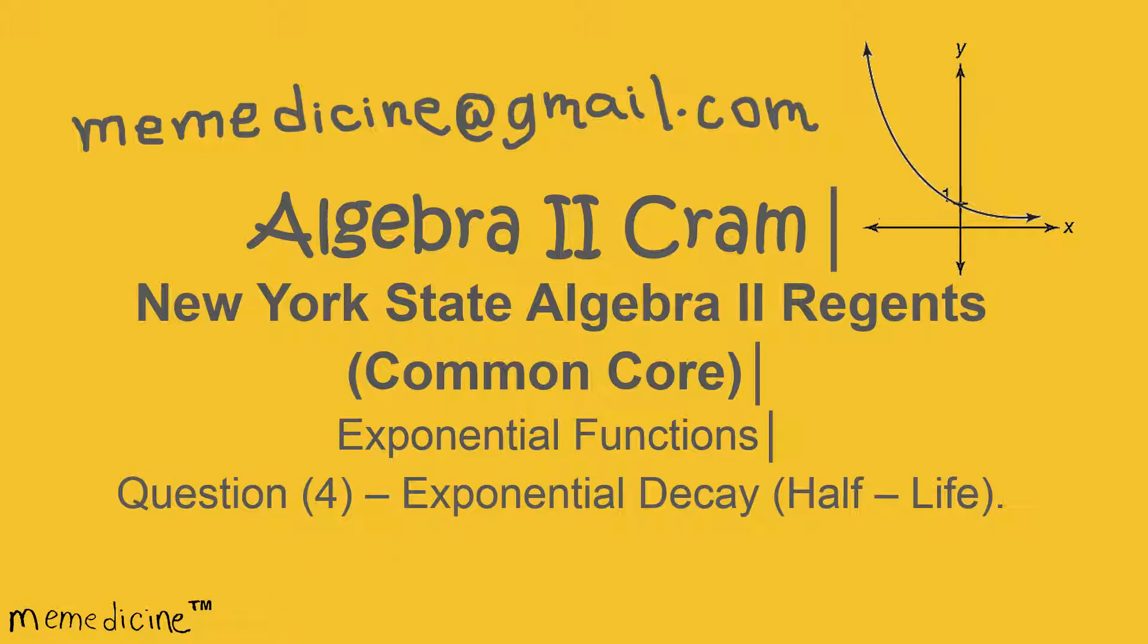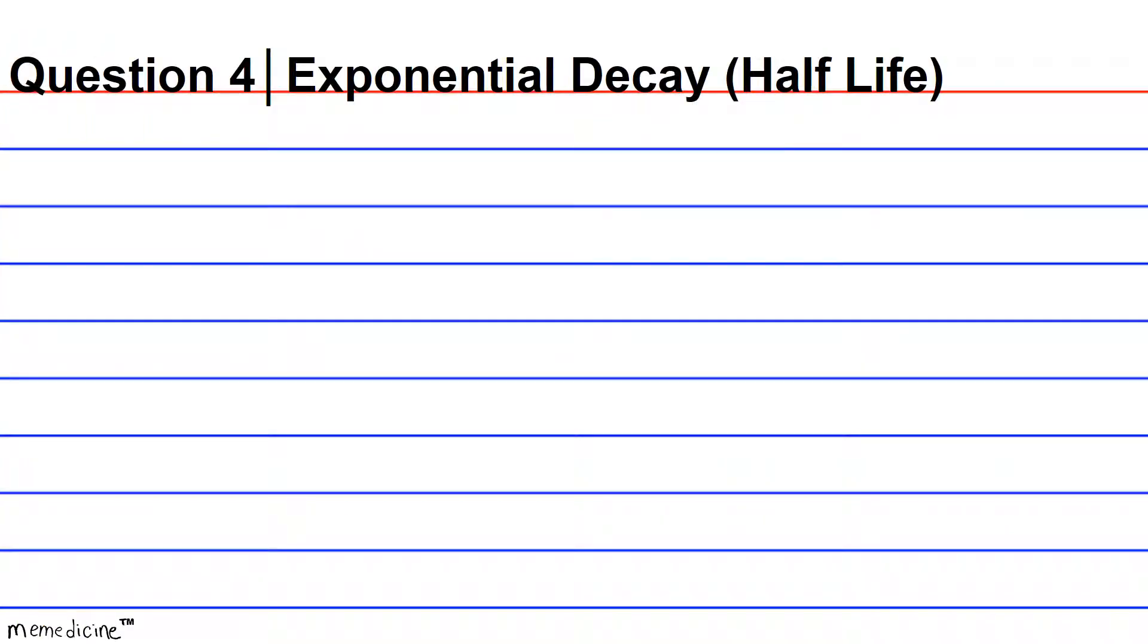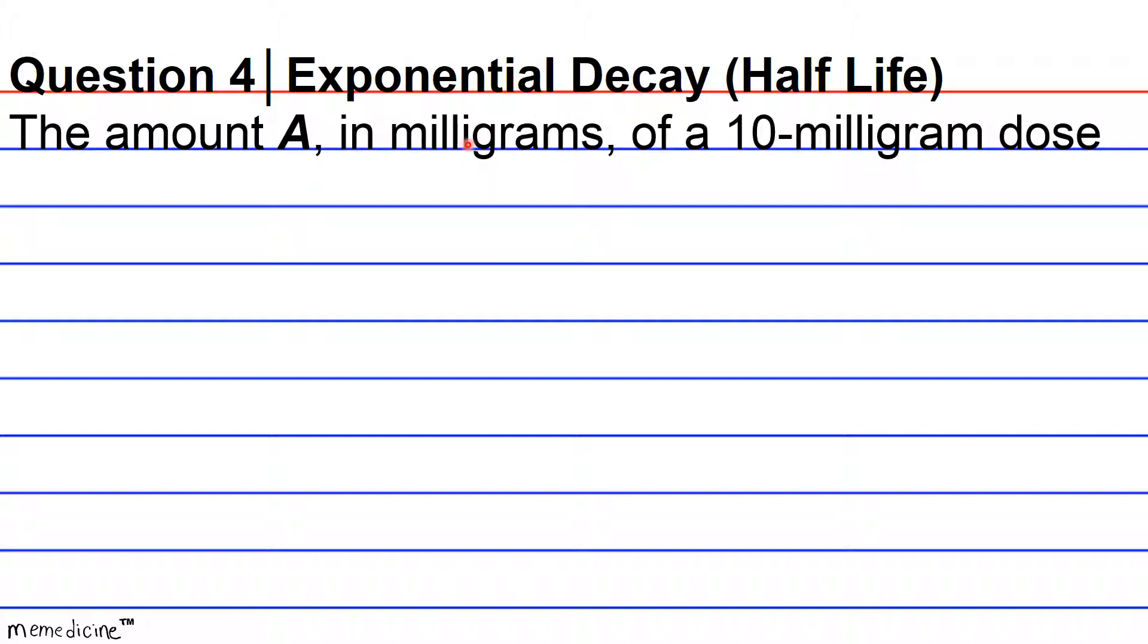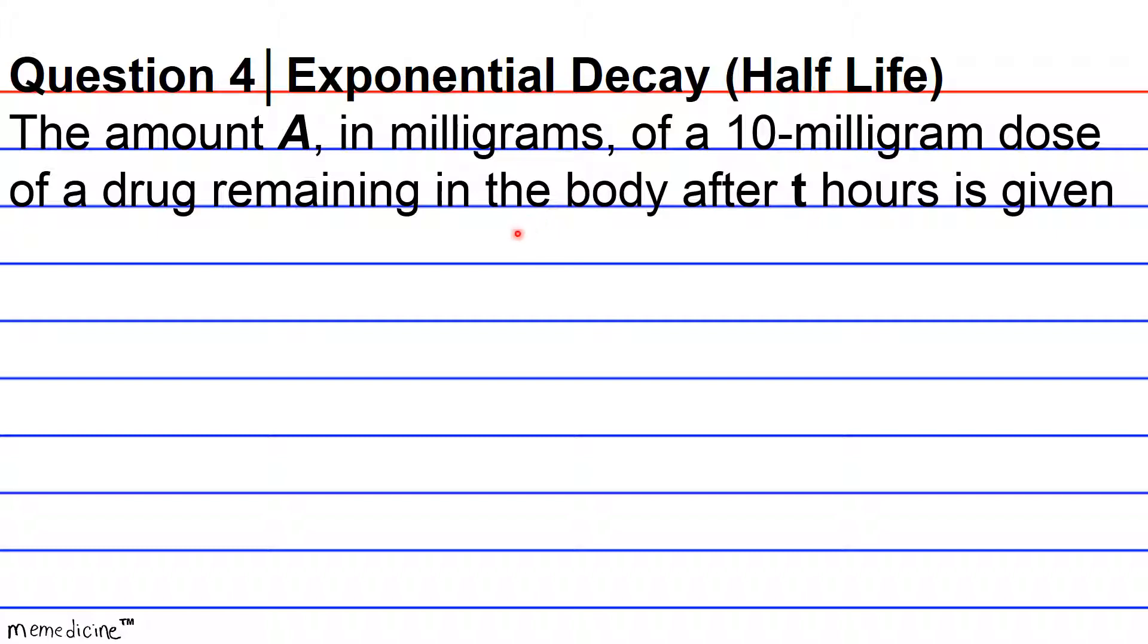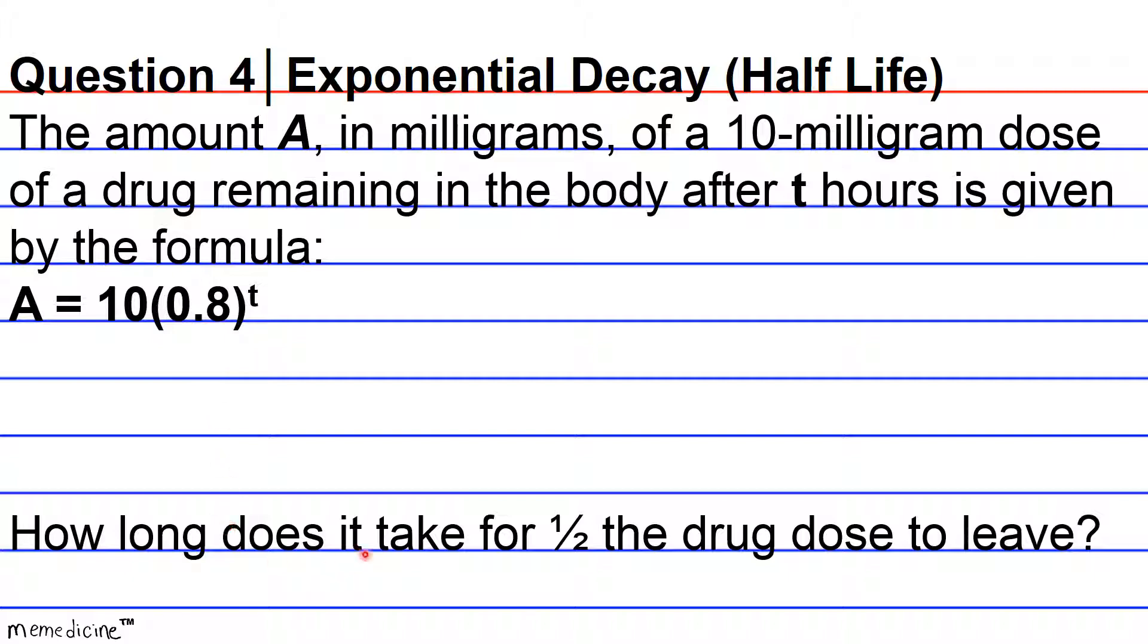Let's delve into the concept. Question 4, Exponential Decay, Half-Life. The amount A in milligrams of a 10 milligram dose of a drug remaining in the body after t hours is given by the formula A = 10(0.8)^t. How long does it take for one half of the drug dose to leave the body?